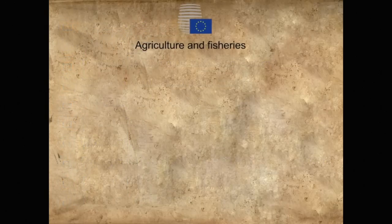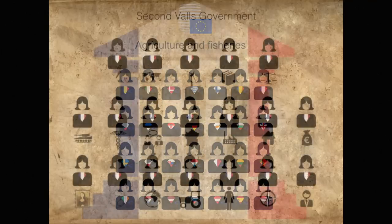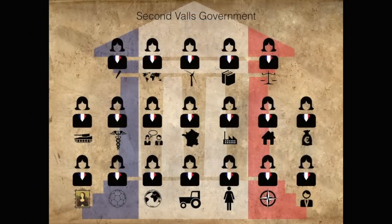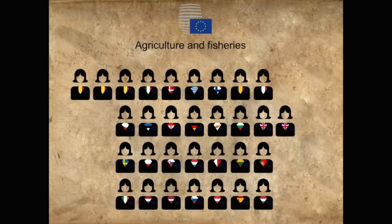For example, all National Ministers responsible for agriculture and fishery policy come together in the EU's Agriculture and Fishery Council. As some Council configurations encompass the portfolio of multiple National Ministers, in case of some EU Council configurations, some Member States send more than one Minister.